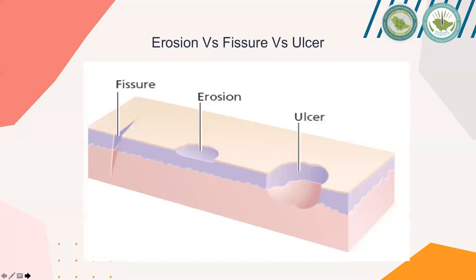This diagram compares ulcer, erosion, and fissure in terms of level. In the case of ulcer, there is involvement of epidermis and dermis, so they usually heal with scar formation. In the case of erosion, there is involvement only of the upper part of the epidermis, so they usually heal to normal skin.